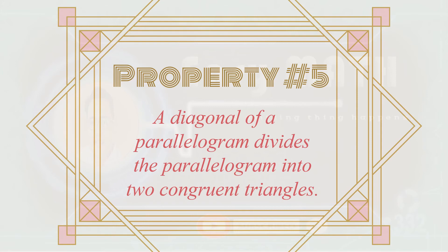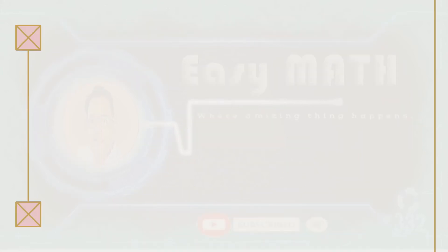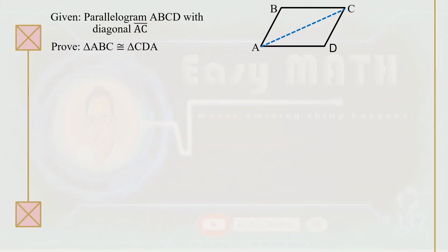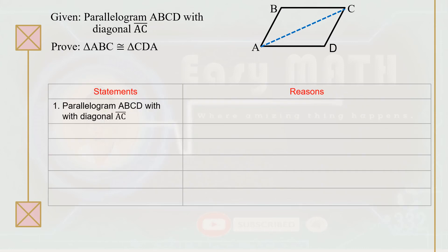Property number five: a diagonal of a parallelogram divides the parallelogram into two congruent triangles. Given parallelogram ABCD with diagonal AC, we're going to prove that triangle ABC is congruent to triangle CDA. Statement number one: parallelogram ABCD with diagonal AC is the given. Statement number two: segment AB is parallel to segment CD, and segment BC is parallel to segment AD. The reason is the definition of a parallelogram.